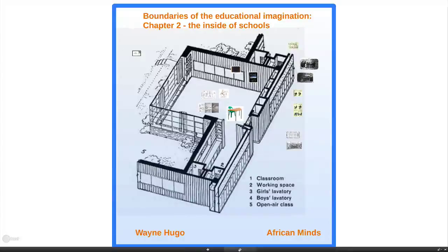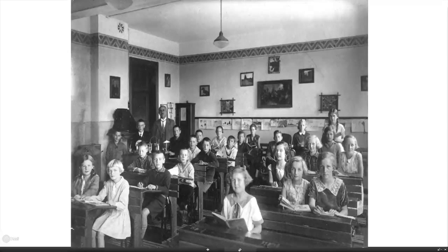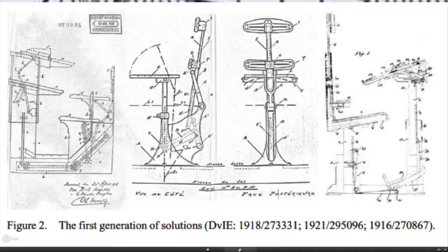In our modern world we assume the classroom is the obvious organizing device of the school, but it wasn't always so. The classroom model really took off in Germany — in Prussia — where they worked out all the technicalities of how a proper classroom should be constructed. The German model was the most successful and powerful model of education in the 19th century. It was far more expensive than the monitorial model — you needed classrooms and teachers — but it produced a better education system.